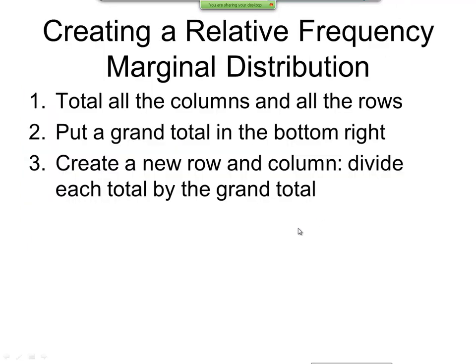Okay, now creating a relative frequency marginal distribution. And these aren't that difficult, that's why I'm not actually doing an example here, just using the one I have. It says total all columns and all the rows, put a grand total in the bottom right, create a new row and column, divide each total by the grand total. And this is a relative frequency marginal distribution.